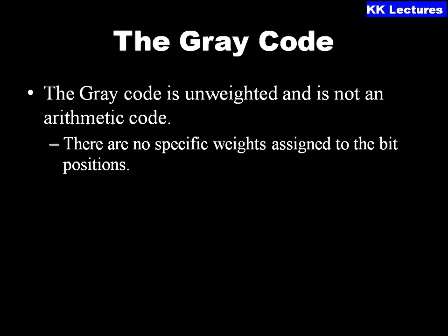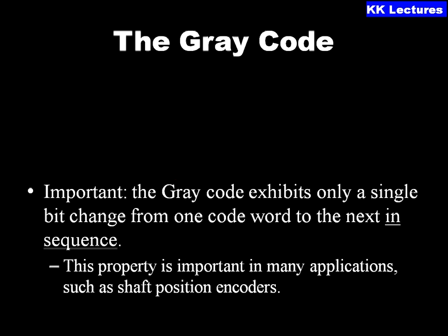The Gray code is an unweighted code and is not an arithmetic code — there are no specific weights assigned to the bit positions. Gray code is mainly important because it exhibits only a single bit change from one code word to the next in sequence. This property is important in many applications such as shaft positioning encoders.